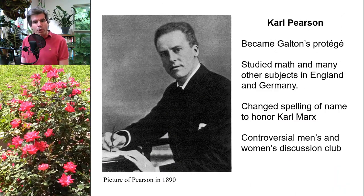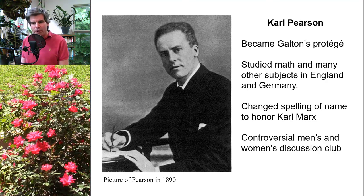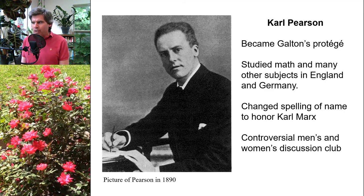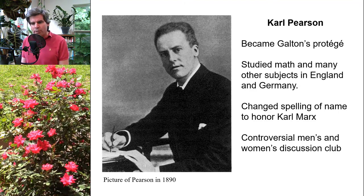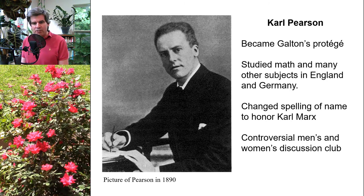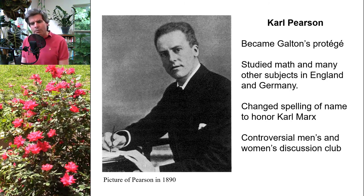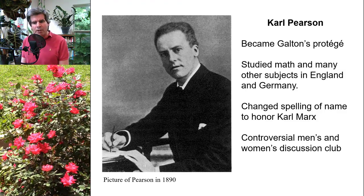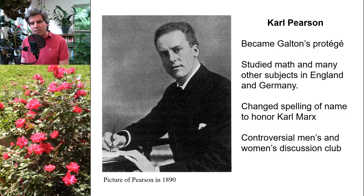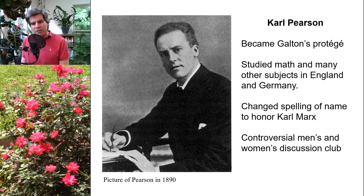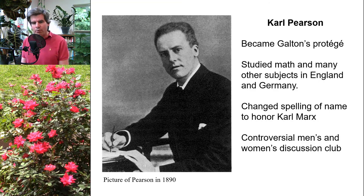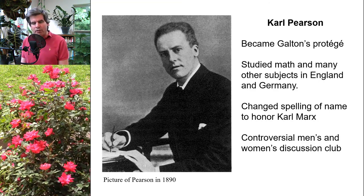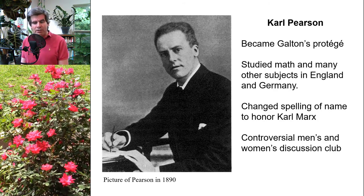The person most directly influenced by Galton's work was Karl Pearson, who would eventually become essentially Galton's protégé. Pearson attended universities in both England and Germany, studying mathematics, physics, and political science. Notably, Pearson may have had somewhat progressive views for the time — he changed the spelling of his first name from Carl with a C to Karl with a K to honor Karl Marx, and he organized a discussion club that included both men and women, which was an unusual and somewhat controversial mixing of genders at the time.